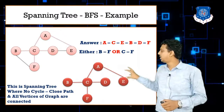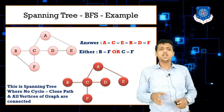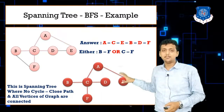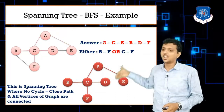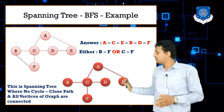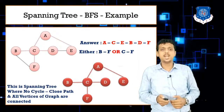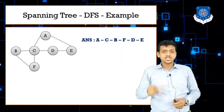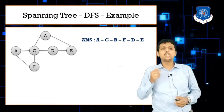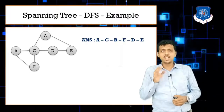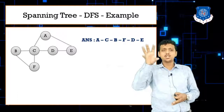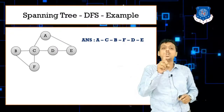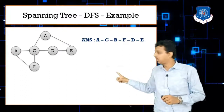This is the spanning tree from BFS. Why we use spanning trees and how to make them will be covered in the spanning tree lecture. For now, remember: make the spanning tree after getting the BFS or DFS answer. Now let's move to DFS. The depth-first search answer is A, C, B, F, D, E. Same as BFS, we can derive the spanning tree directly from this answer.